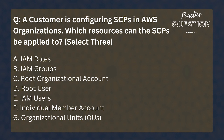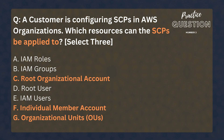A customer is configuring SCPs in AWS Organizations. Which resources can the SCPs be applied to? Select three answers: IAM roles, IAM groups, root organizational account, root user, IAM users. Remember that service control policies used to restrict permissions can be applied at the root organizational level, to a single member account, or to a group of accounts grouped together under an OU.